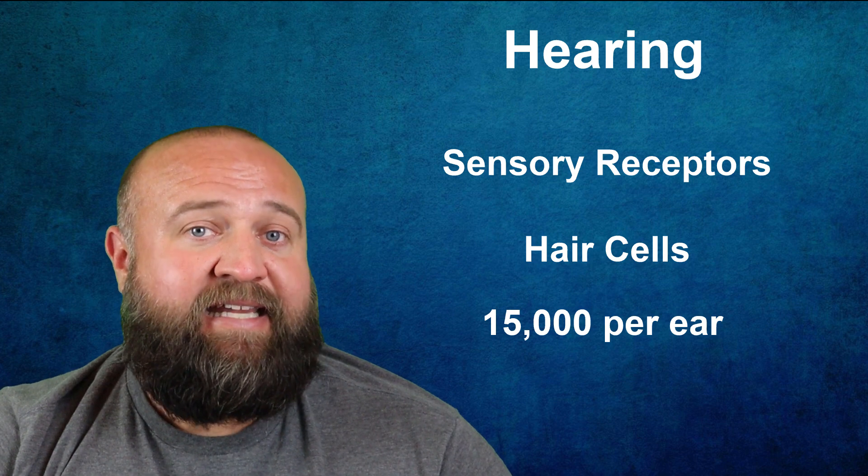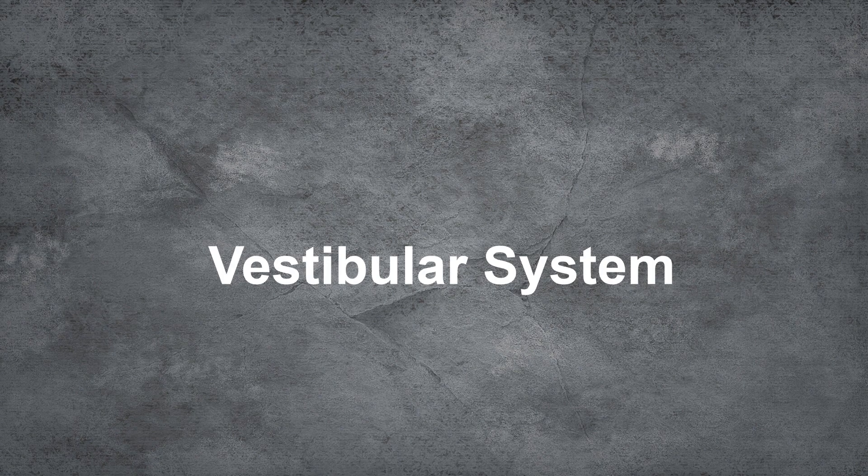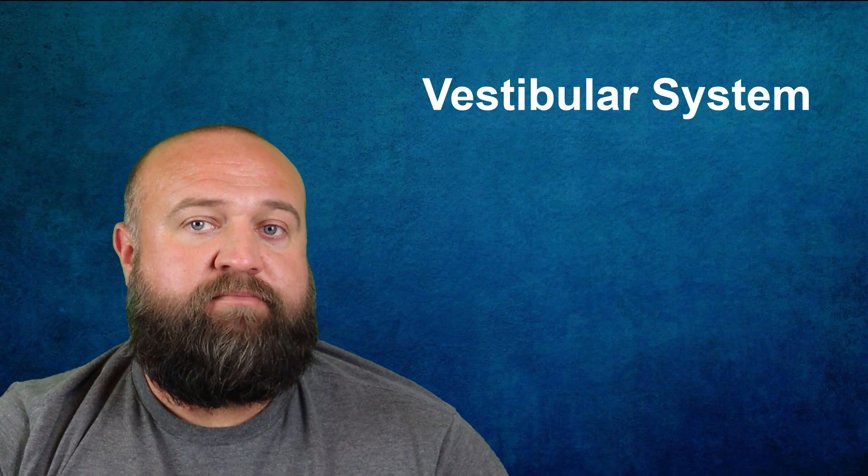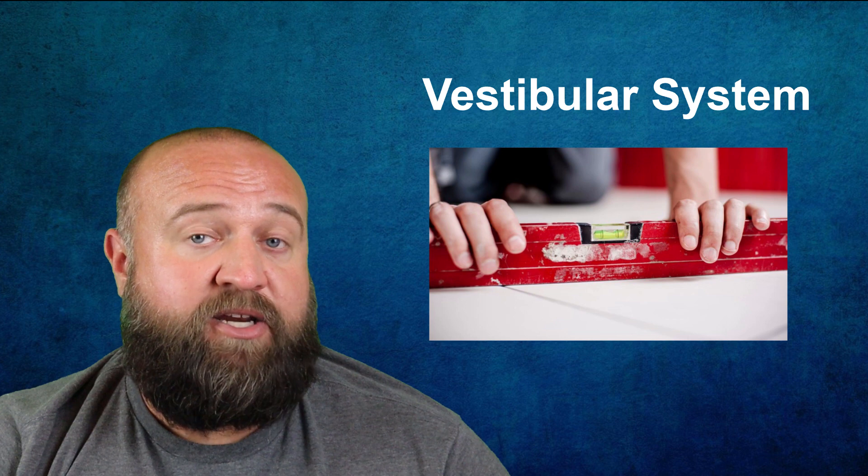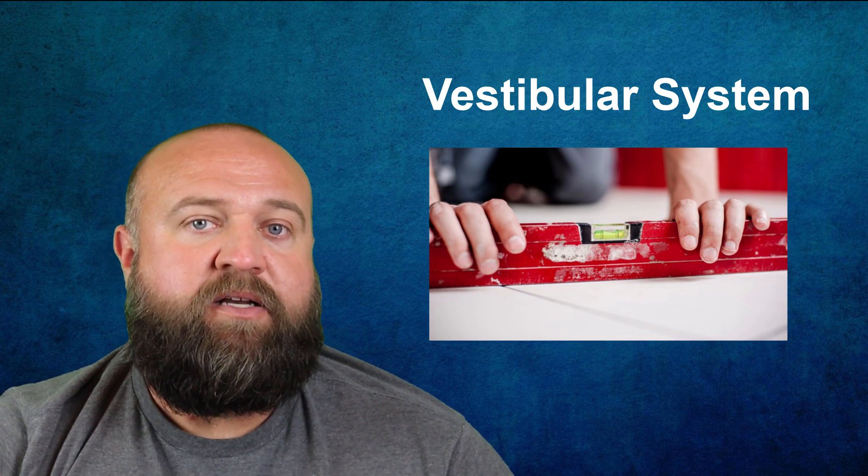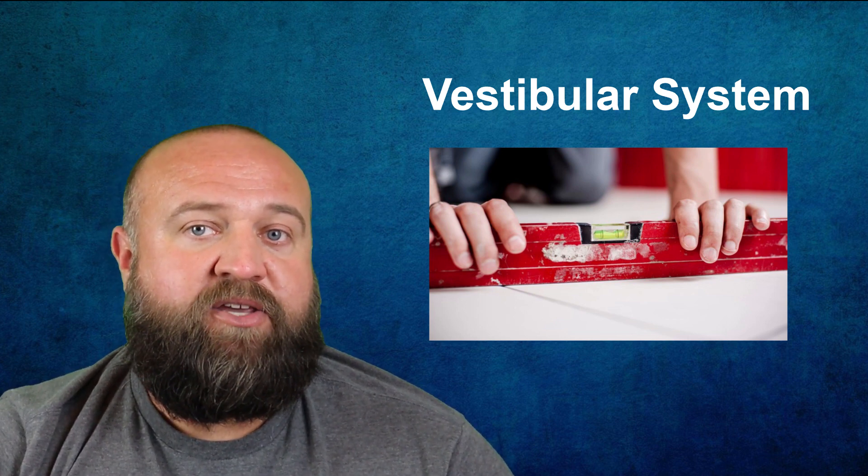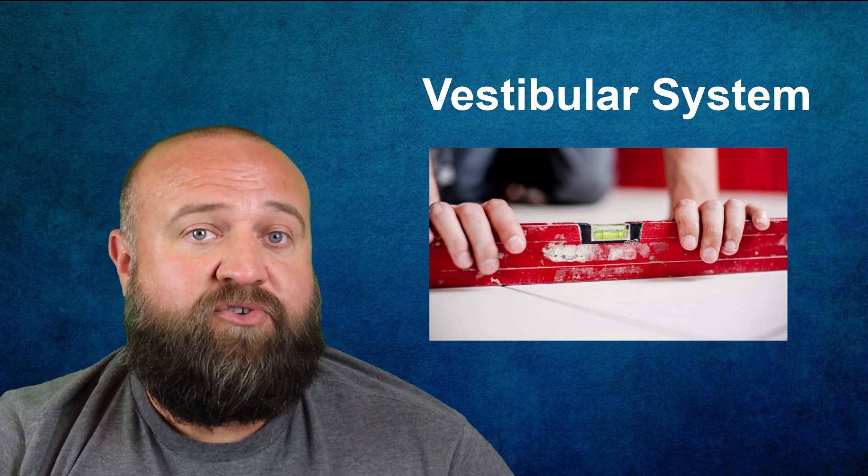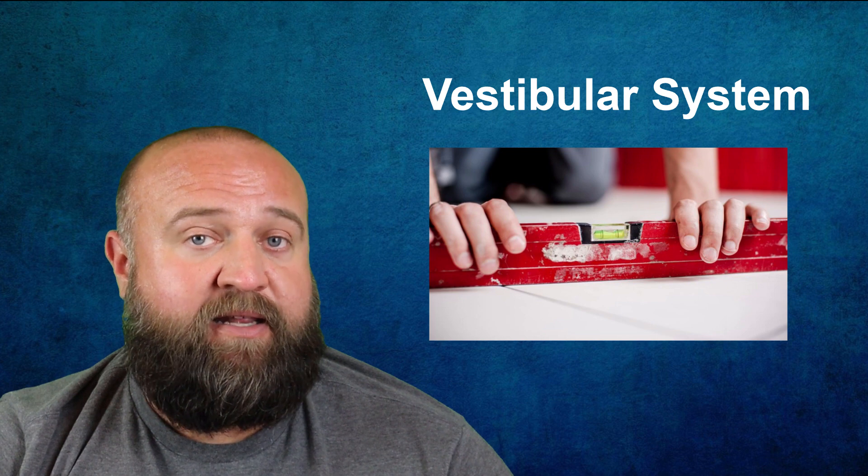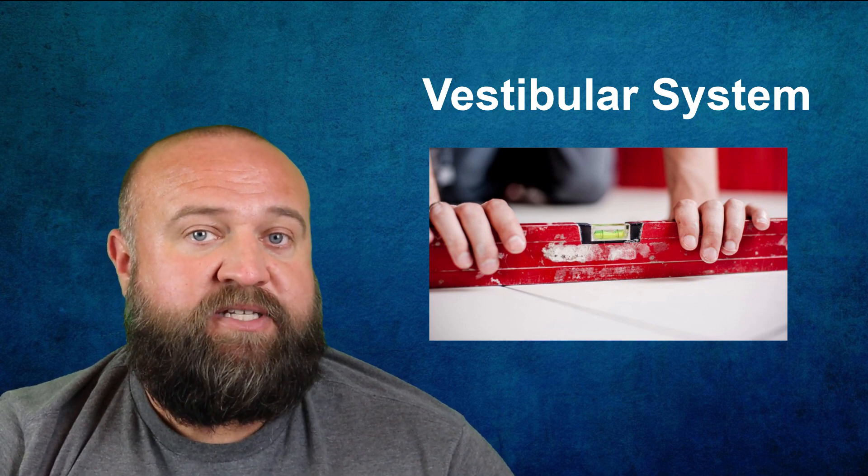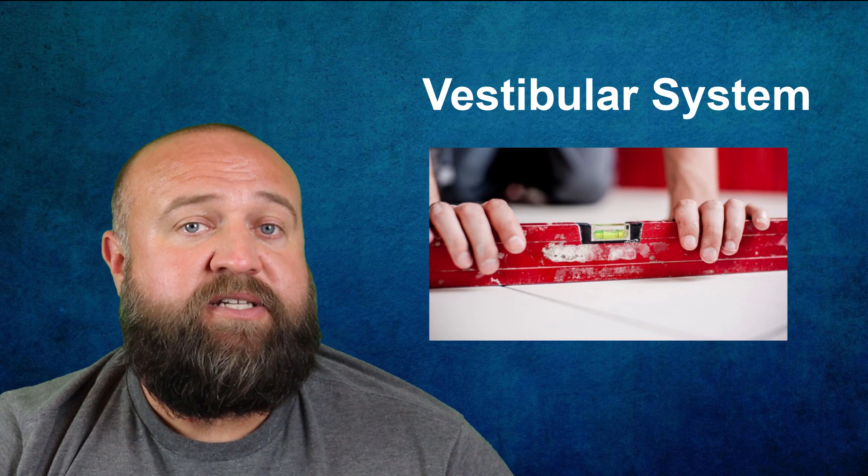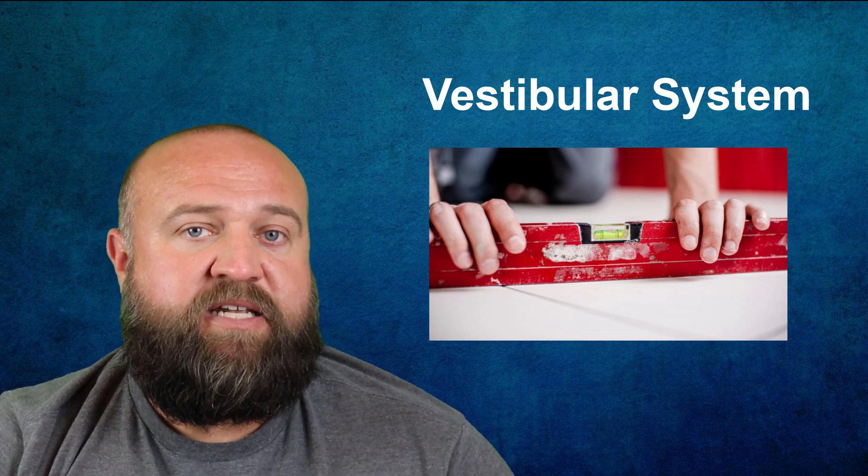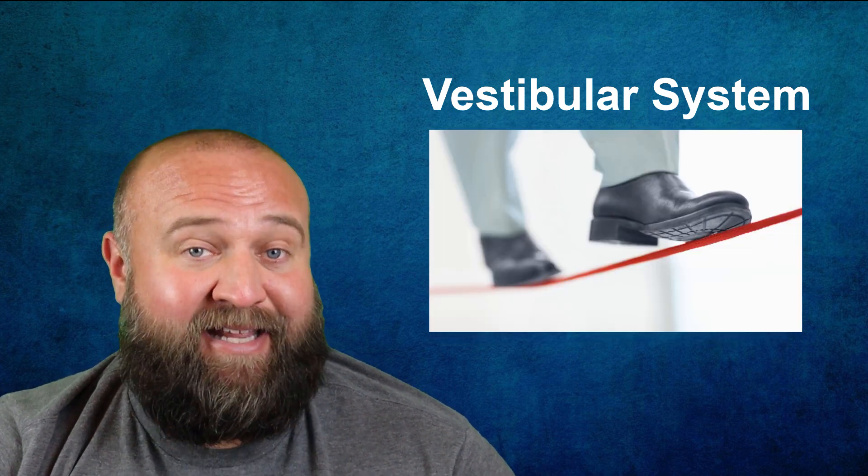Now, I said that I would get back to those semicircular ducts I mentioned earlier. I like to think of the semicircular ducts as being kind of like a level that a carpenter may use to make sure that something is straight. So, the premise with a level is that you have a little bit of air kept within a liquid. You can tell when something is straight when that little air bubble is balanced. Your vestibular system works very similar to this and occurs in the semicircular canals found in the inner ear. The vestibular system is what gives us a sense of balance.